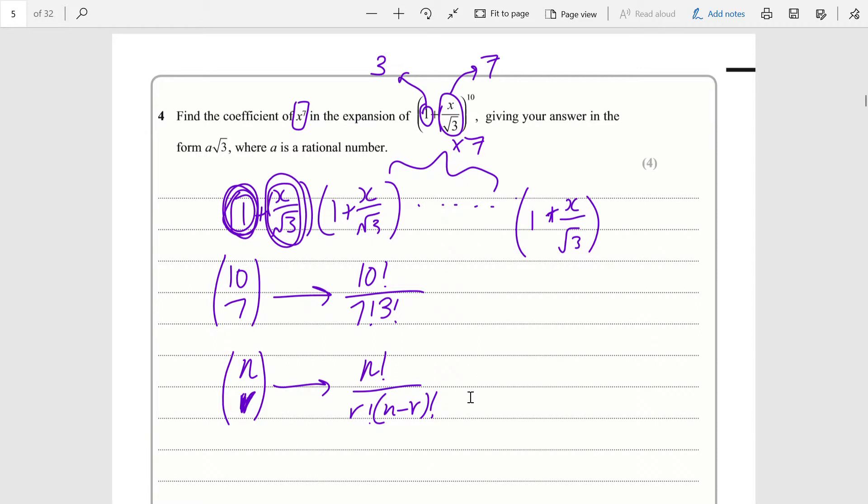You may notice that n choose r equals n choose n minus r. This is because choosing 7 out of 10 is the same as choosing 3 out of 10 to exclude from your choice, leaving you with 7. If you choose r number of things, then choosing n minus r number of things would be the same as choosing r number of things to exclude. That's why this is the same.